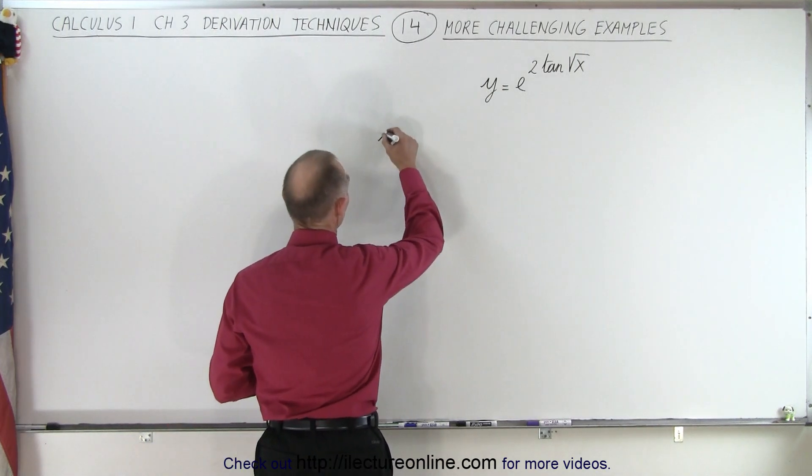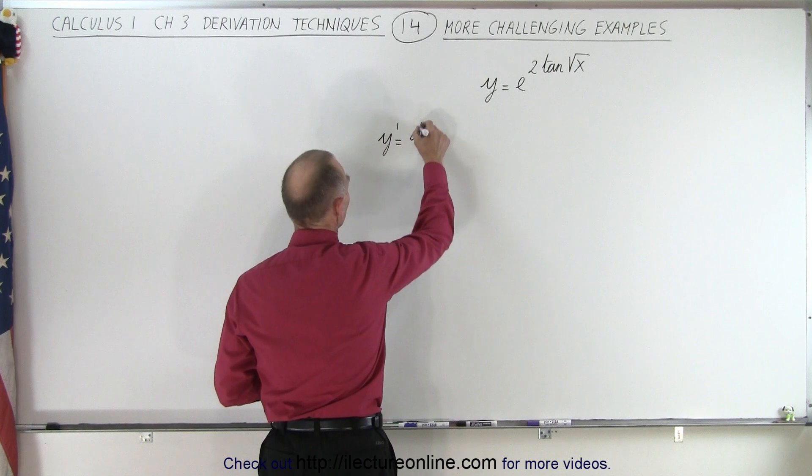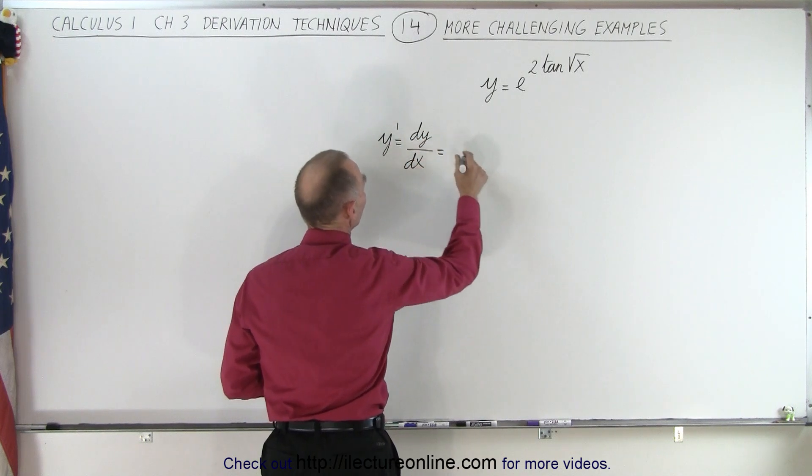Well, again, we use the rule. We have y prime, which is the same as dy dx, which is equal to,